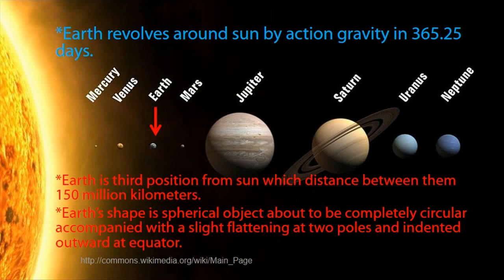Earth revolves around the Sun by the action of gravity in 365.25 days. Earth is in the third position from the Sun, with a distance between them of 150 million kilometers. Earth's shape is a spherical object, almost completely circular, with a slight flattening at the two poles and an indentation outward at the equator.